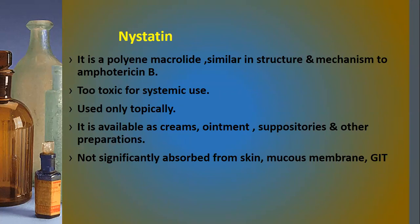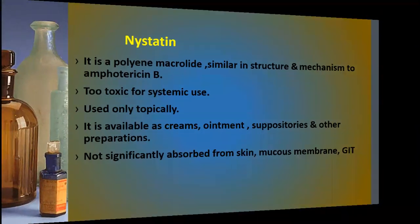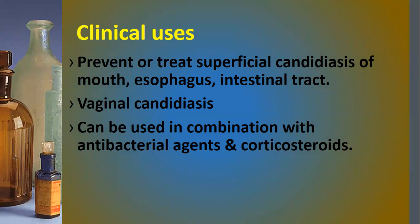Another drug is nystatin, which is another macrolide similar in structure and mechanism to amphotericin B. However, it is too toxic for systemic use — it is used only topically, available as cream, ointment, and other preparations. It is not significantly absorbed from skin, mucous membranes, or the GI tract. Its clinical use is for preventing superficial candidiasis of the mouth, esophagus, and intestinal tract, and for vaginal candidiasis. It cannot be used in combination with antibacterial agents or corticosteroids.